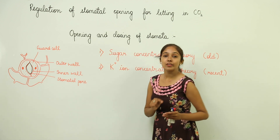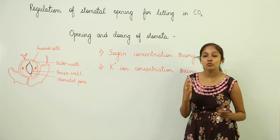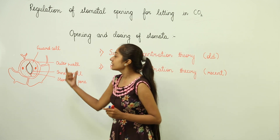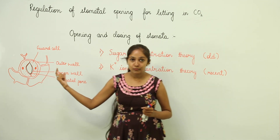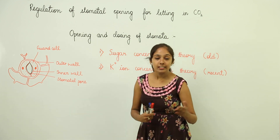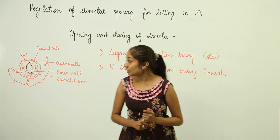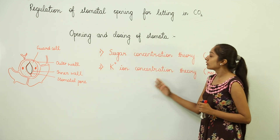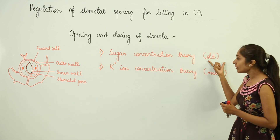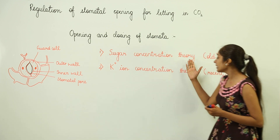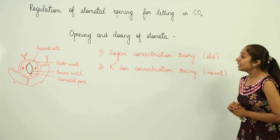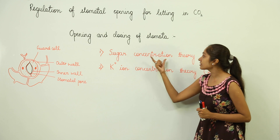During the day when photosynthesis is going on, carbon dioxide is going to diffuse in and the stomatal pore is open. But during night when there is no photosynthesis and it's dark, the stomatal pore is going to get closed. We'll be discussing two theories: the older sugar concentration theory and the recent potassium ion concentration theory.